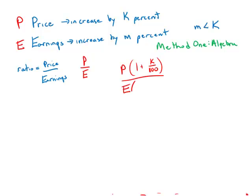Similarly, E times (1 + M/100) is E increased by M percent. Multiplying numerator and denominator by 100 to clear the fractions, we get P(100 + K) over E(100 + M).